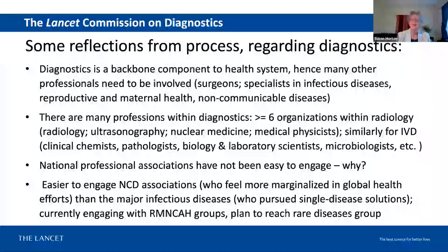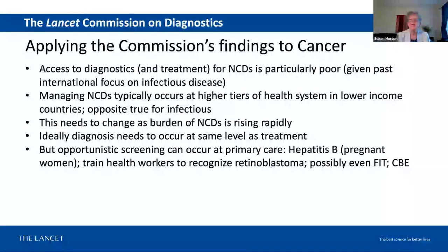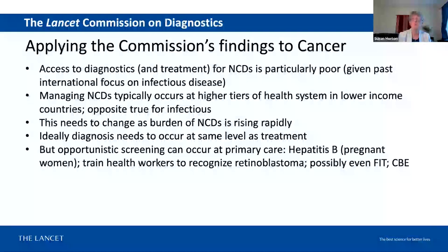How does this apply to cancer? Cancer is unusual in that more of the resources for diagnosis and treatment tend to be located at referral hospitals, especially in low- and middle-income countries. In high-income countries, we have the resources to decentralize imaging and diagnostics like mammography at least to first level hospitals, which is not currently the case in LMICs. But that has to change — we have to be able to decentralize screening and diagnosis of NCDs to lower levels in the health system. Otherwise, poor people simply cannot afford to travel to the capital city for diagnosis and treatment. We may not have diagnosis at the primary health care level, but we should think about opportunistic screening and referring people at least to the first level hospitals.